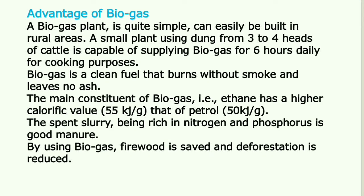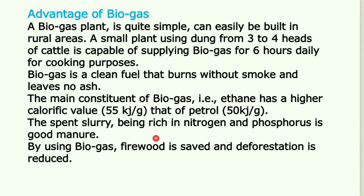What are the advantages? A biogas plant is quiet, simple and can easily be built in rural areas. A small plant using dung from 3 to 4 heads of cattle is capable of supplying biogas for 6 hours daily for cooking purposes. Biogas is a clean fuel that burns without smoke and leaves no ash. The main constituent of biogas, methane, has a higher calorific value than that of petrol. The spent slurry, being rich in nitrogen and phosphorus, is a good manure. By using biogas, firewood is saved and deforestation is reduced.